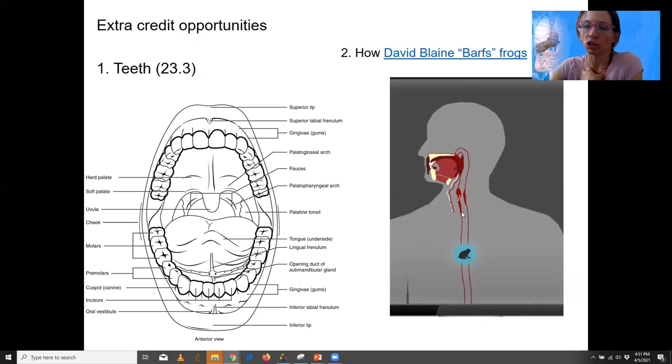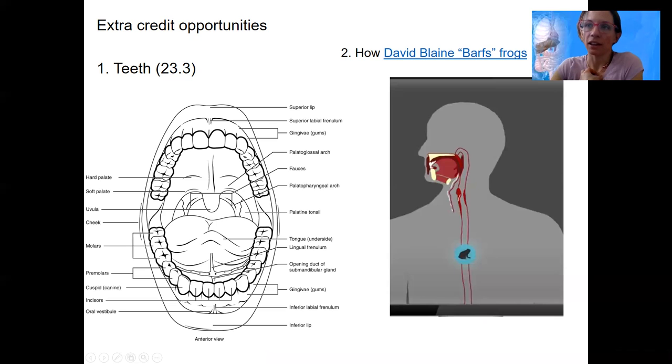He's able to contract and control his esophageal muscles so well that he can hold frogs and other things, water, oil in his esophagus and then bring them up when he wants to regurgitate them and they're still alive. Huge amounts of water. It's pretty cool.